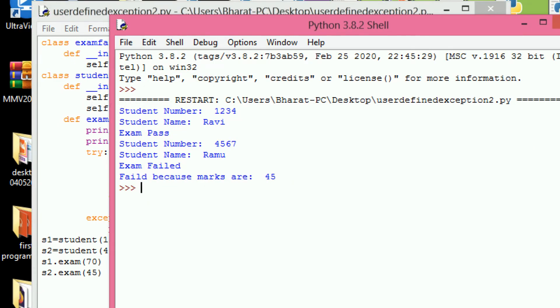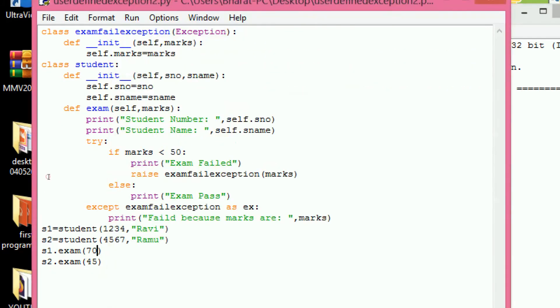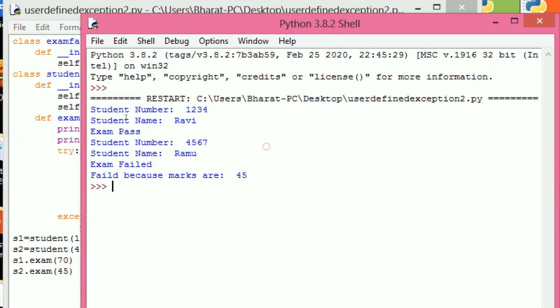Student number 1234, name Ravi, exam pass. He gets 70. Next one, student number 4567, student name Ramu, exam failed because marks are 45.